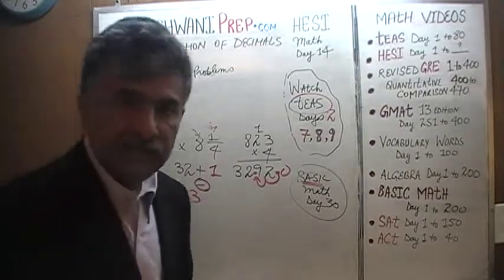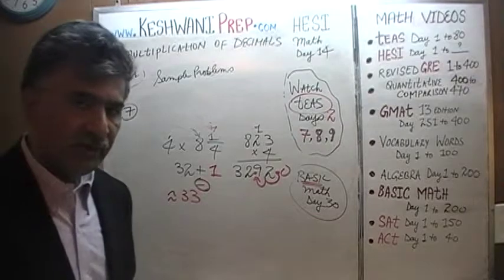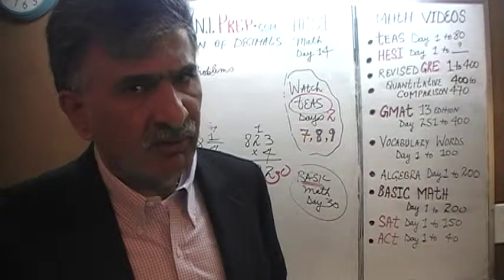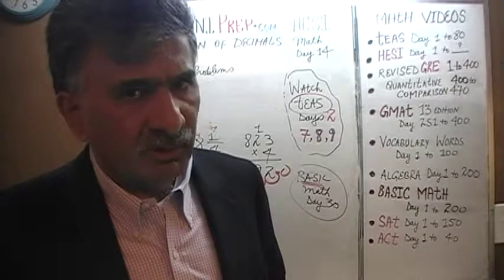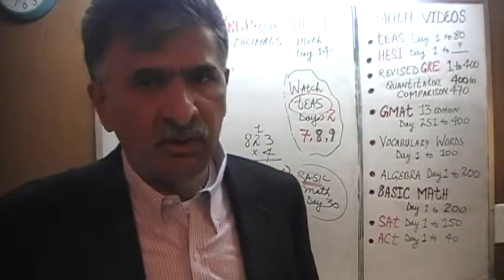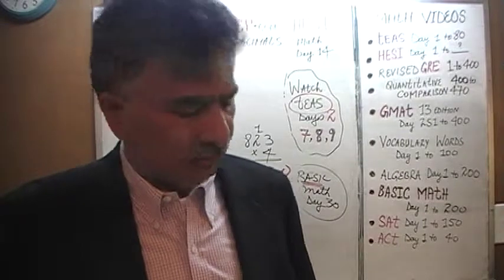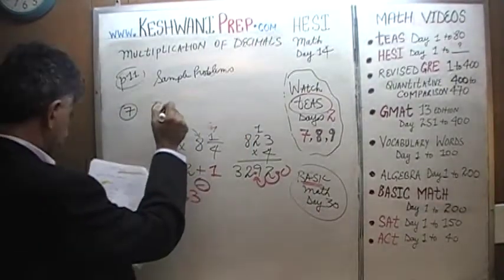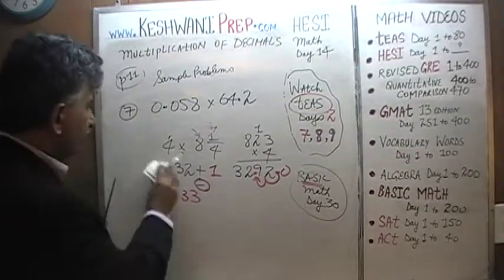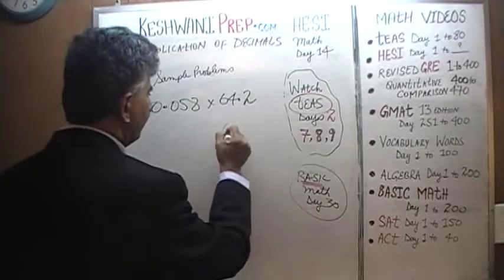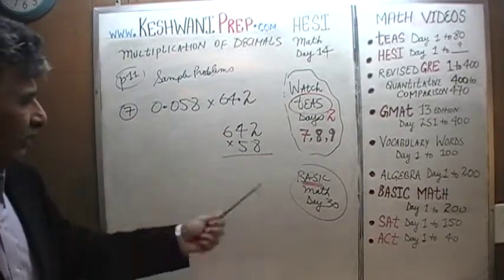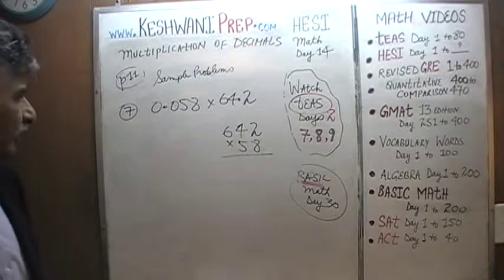In number 7 you will see the advantage of being able to estimate, because sometimes if you try to do the problem exactly as given, it's very annoying and time consuming. When you are under pressure because of time, you are more likely to end up making a mistake — which is exactly what they are hoping. Learn to estimate, take charge of the exam, take charge of the situation. For example, here they tell you 0.58 times 64.2.